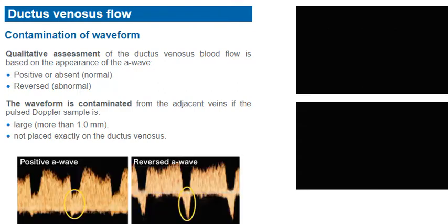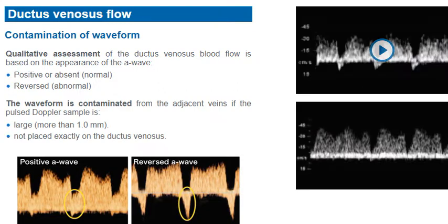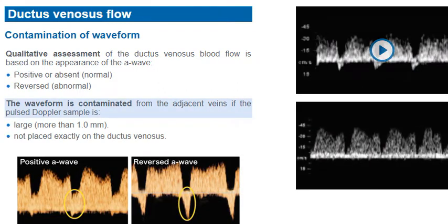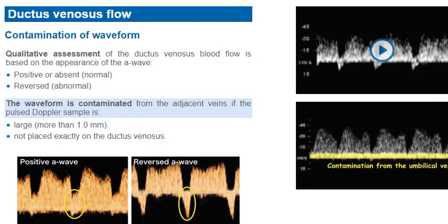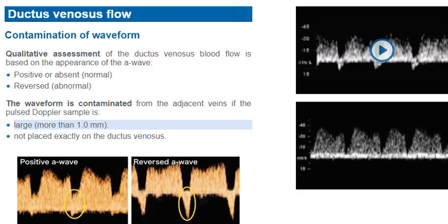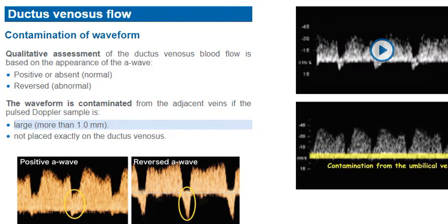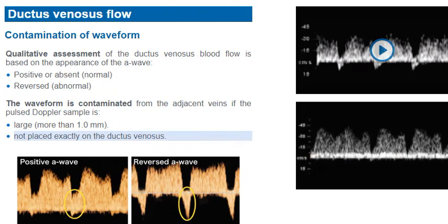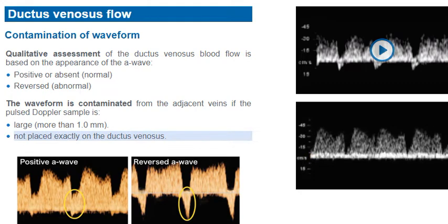The waveform from the ductus venosus is contaminated from the adjacent veins if the pulsed wave Doppler sample is large — more than 1 mm — or if it is not placed exactly on the ductus venosus.